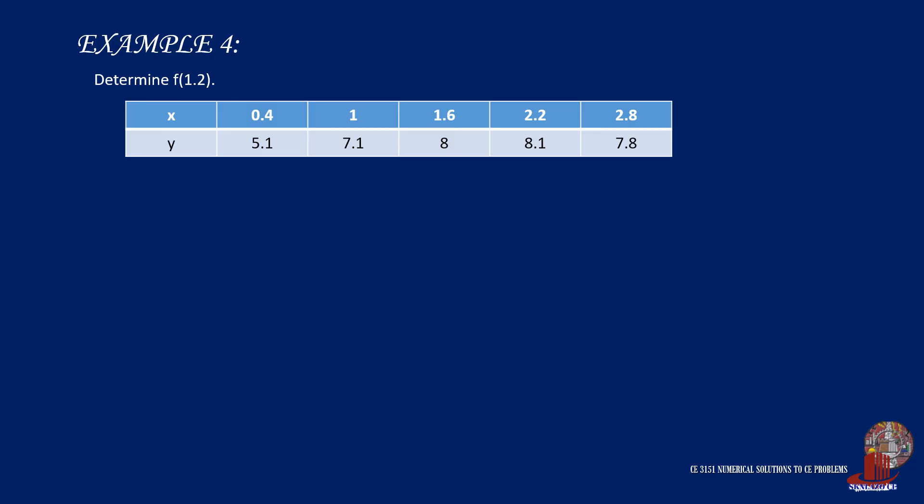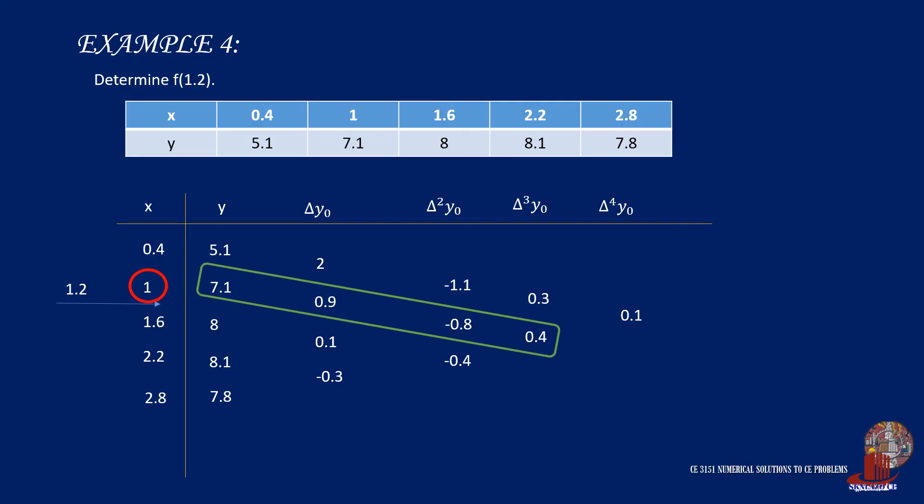We compare the value we just determined when we take the point just preceding 1.2. Note that from the difference table, there are only 4 elements included, that would be 7.1, 0.9, negative 0.8, and 0.4.